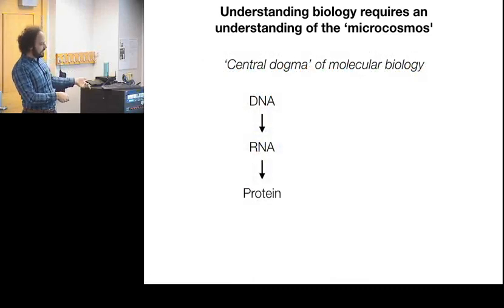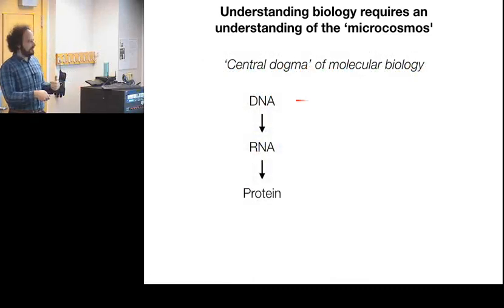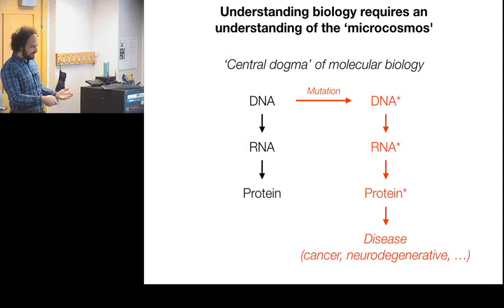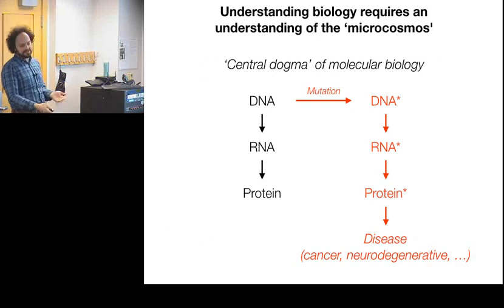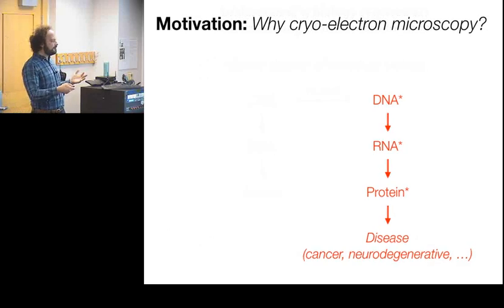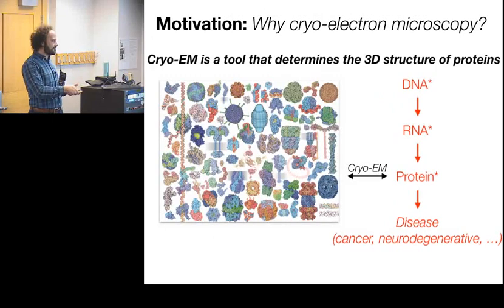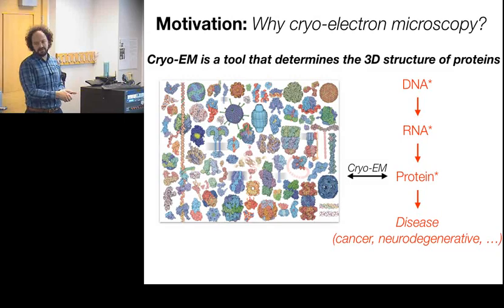The central dogma is that your DNA encodes the sequence of proteins. In the context of medicine, mutations in DNA result in proteins doing the wrong task, which then leads to some kind of disease. Cryo-EM is a tool that lets us solve protein structures using cryo-electron microscopy — and that's what we'll be talking about today.